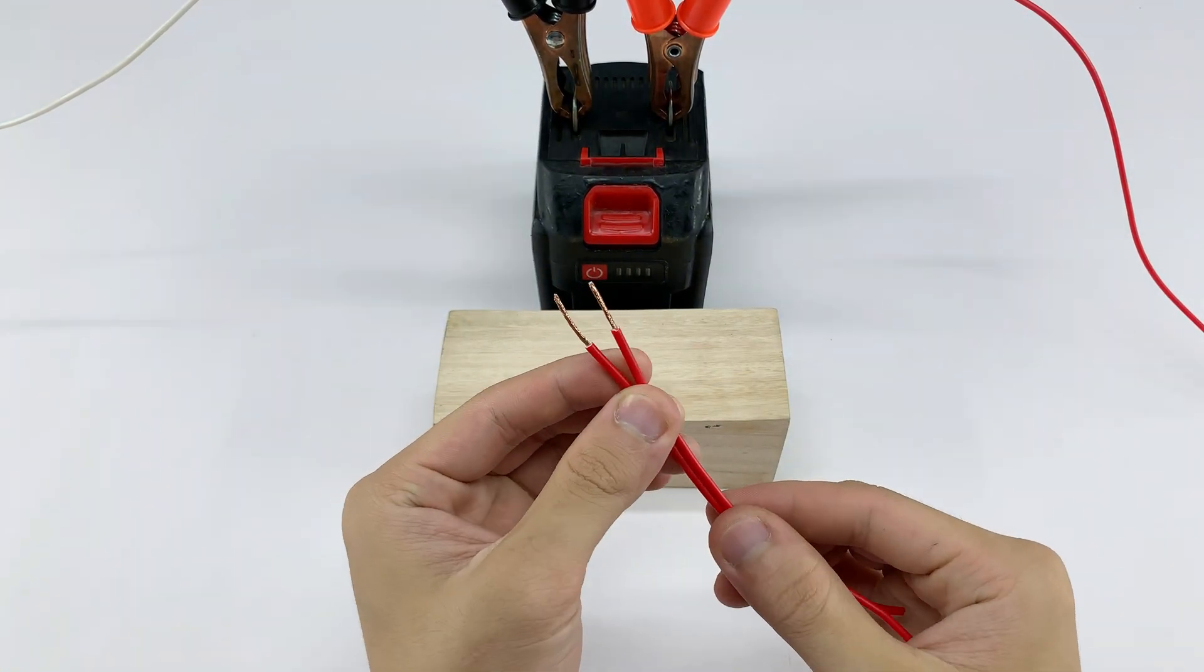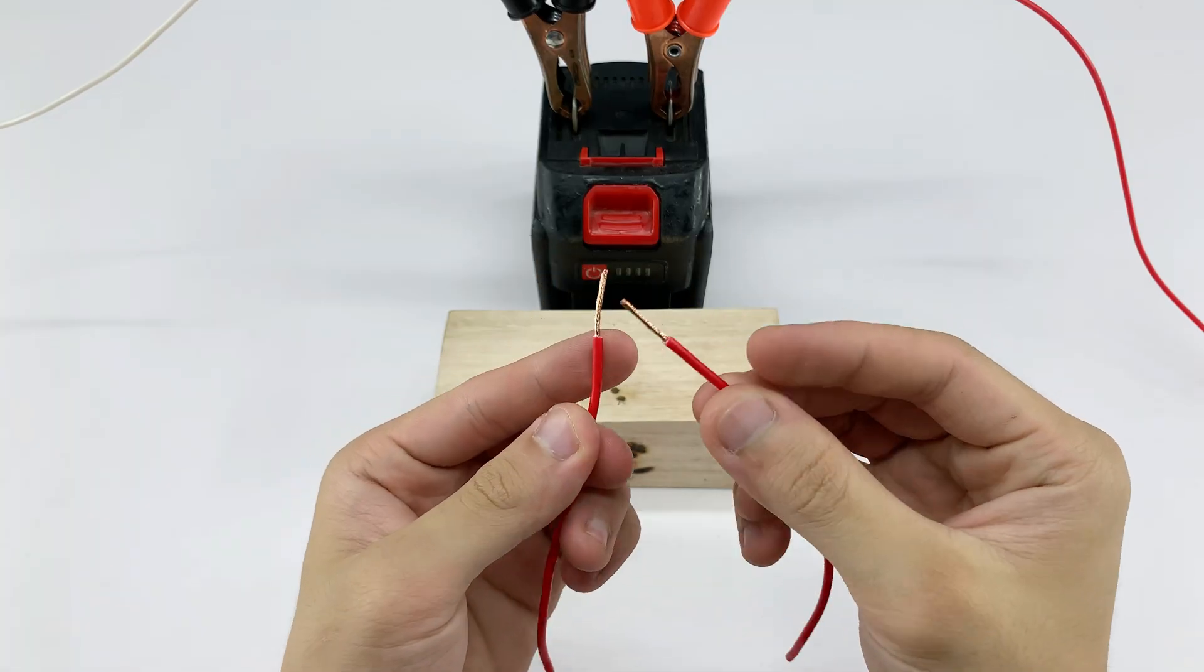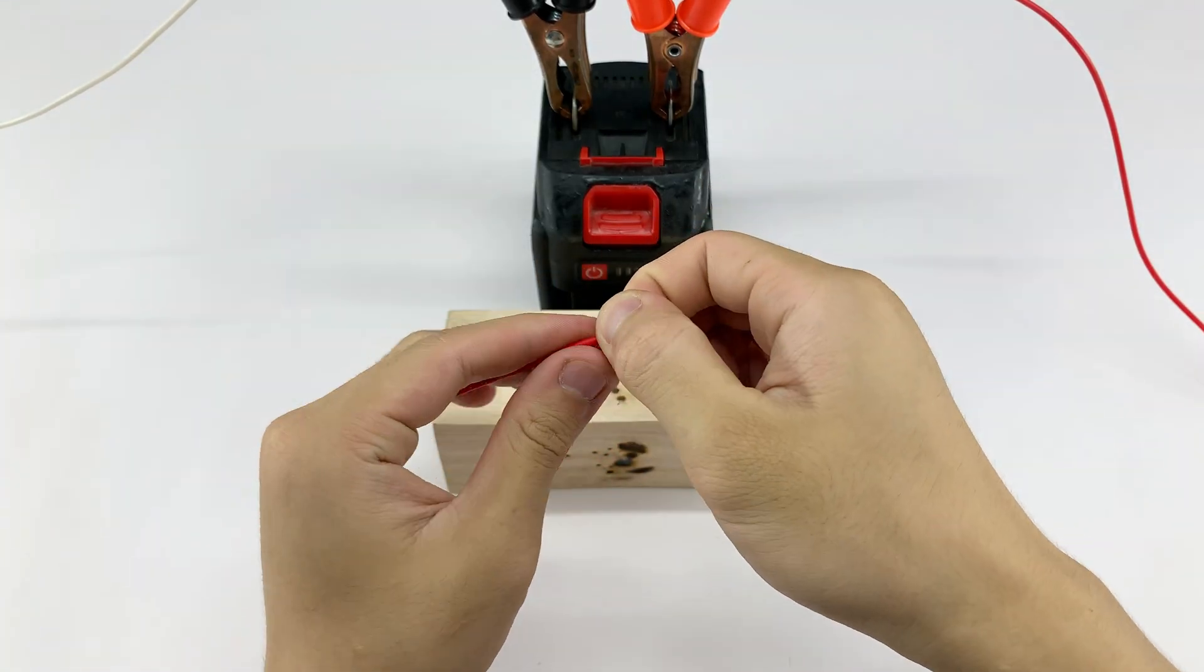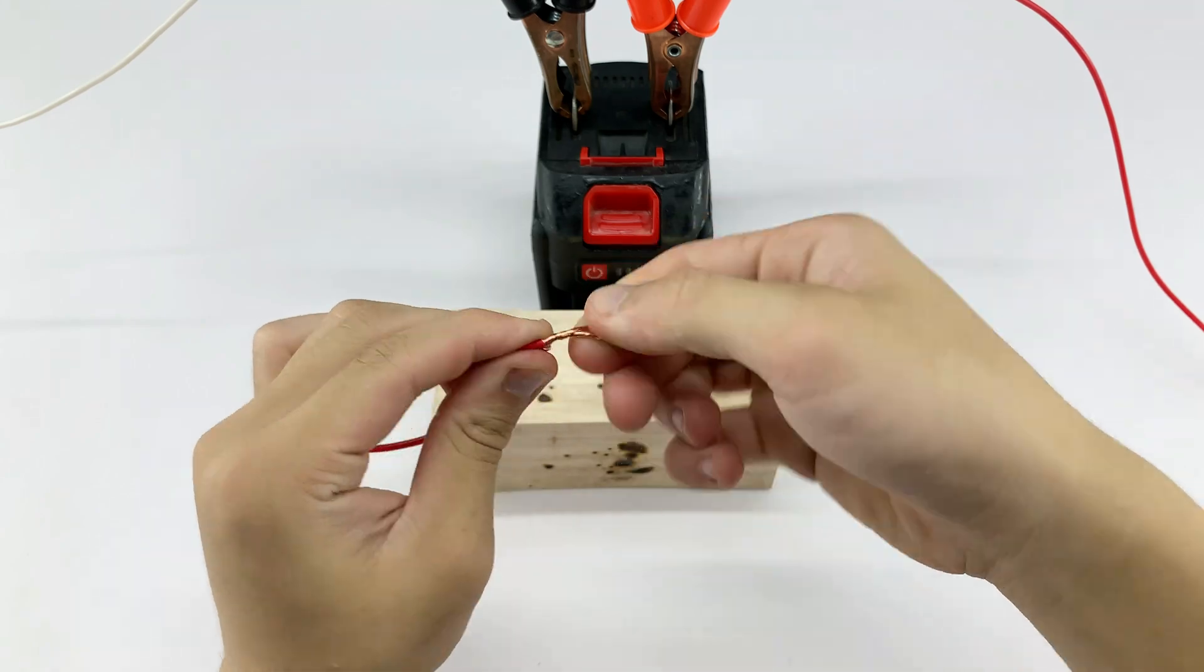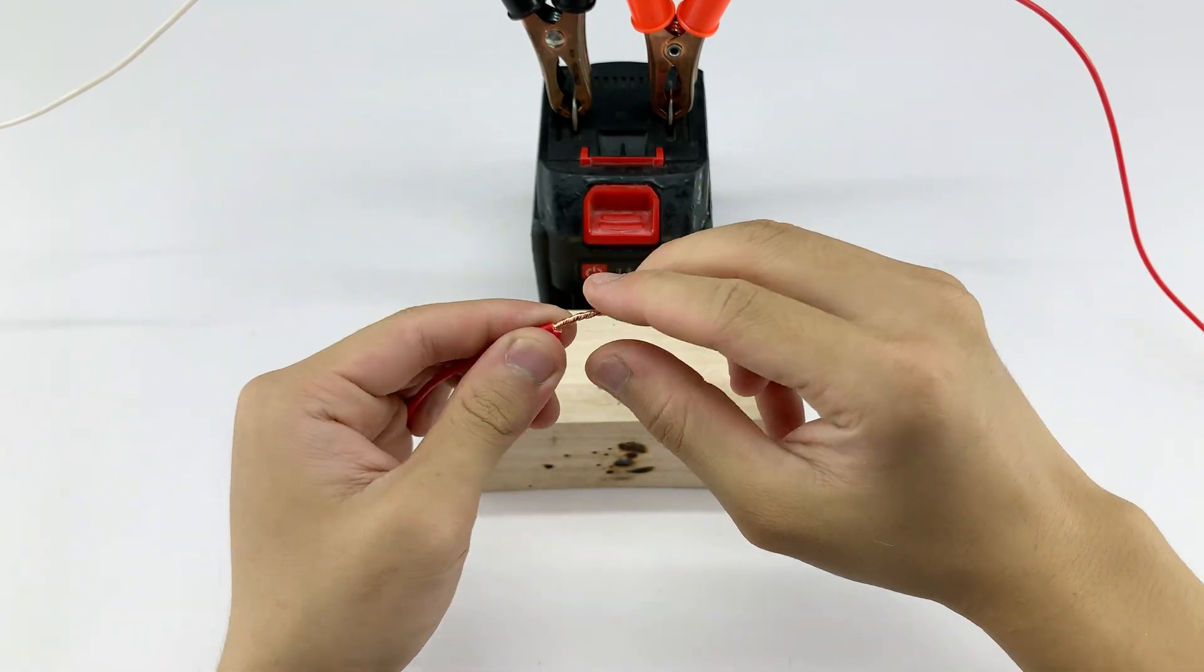After this simple test, just soldering these two wires, we'll move on to the more exciting part: fixing an LED by soldering it directly. So don't click away, the best part is coming up.